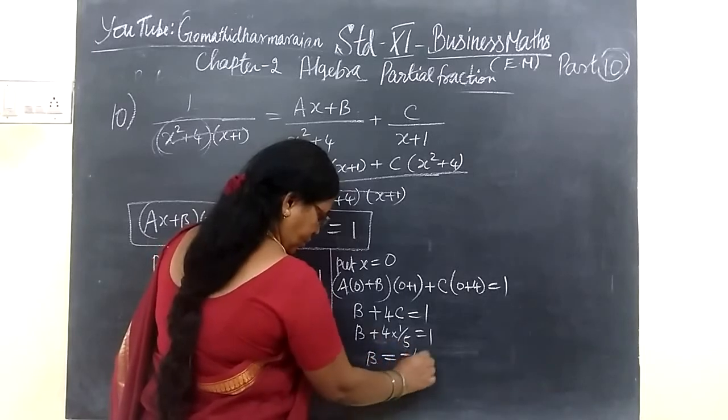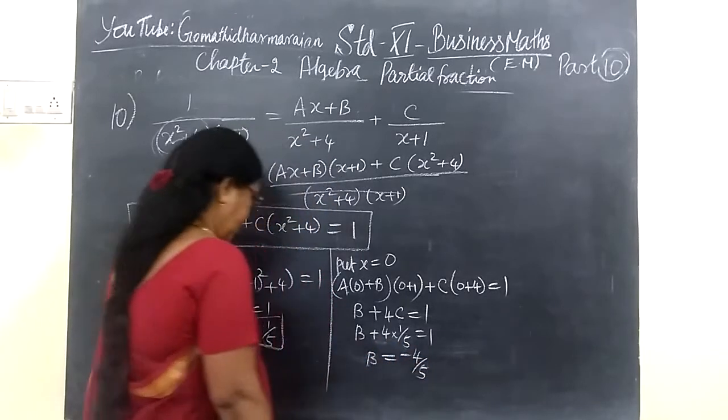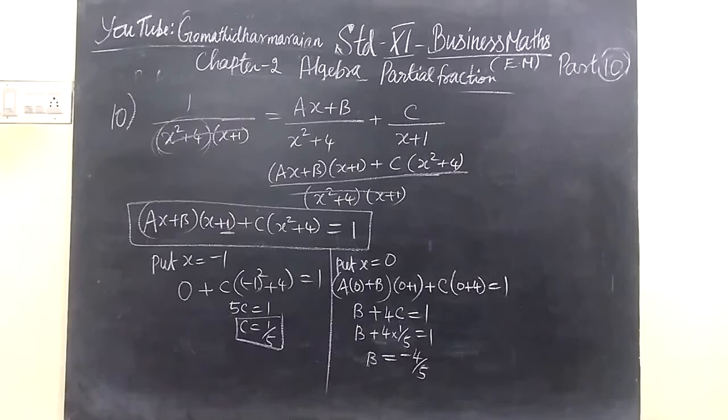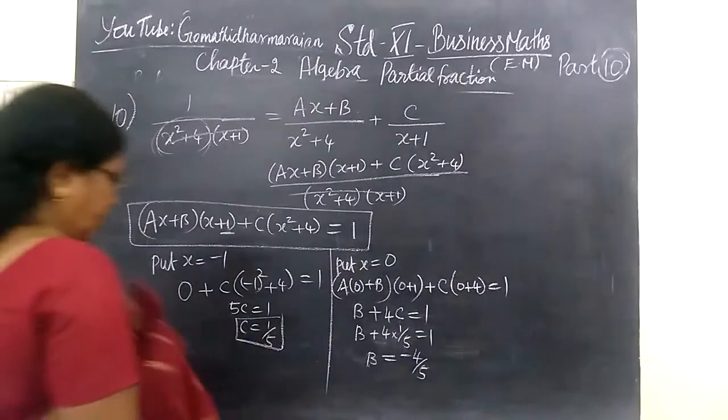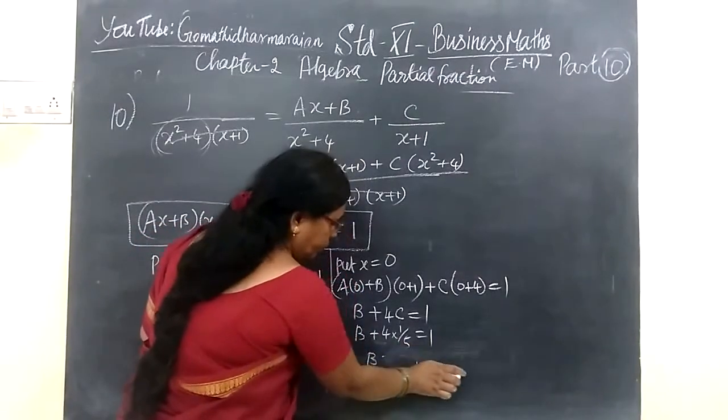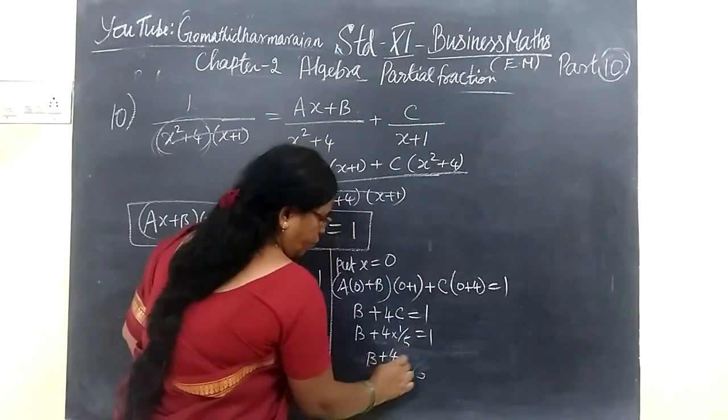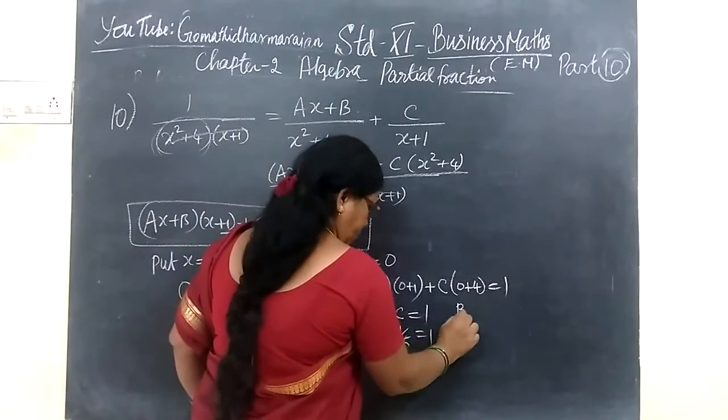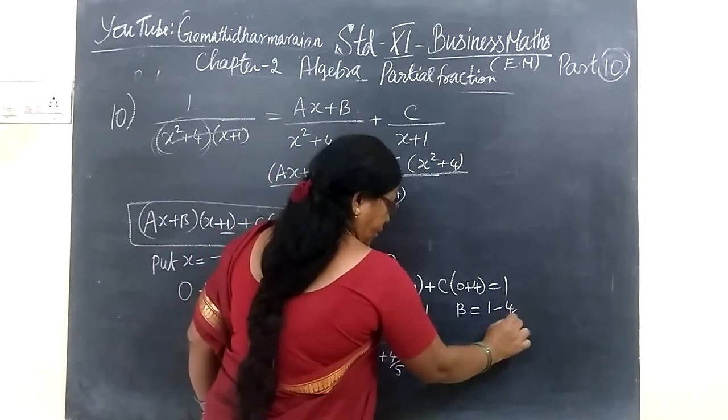4 into 1 by 5 minus... which is the next one x² plus 4. So just like this, here plus 4 by 5 which equals to 1.